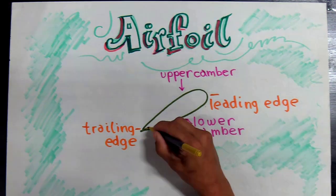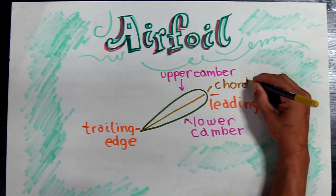Now if you take a line and go straight from the leading edge to the trailing edge, this is the chord line.